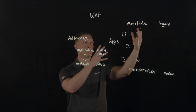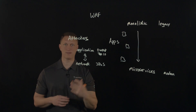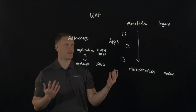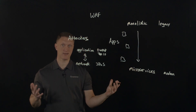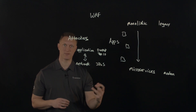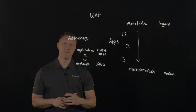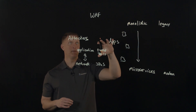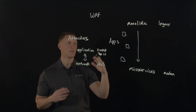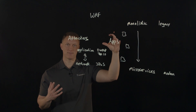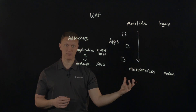A monolithic legacy application is not going to change very often — it's not going to be updated a thousand times a day; that's just not the nature of the way it's built. Whereas a microservices-based application may literally be updated a thousand times every single day with DevOps practices and the whole CI/CD pipeline. So the question is: where do you put the web application firewall, and what kind? The answer is you'll very likely need more than just one.